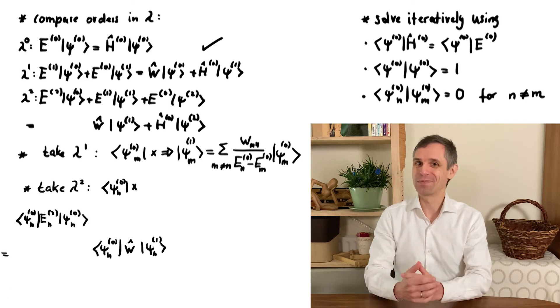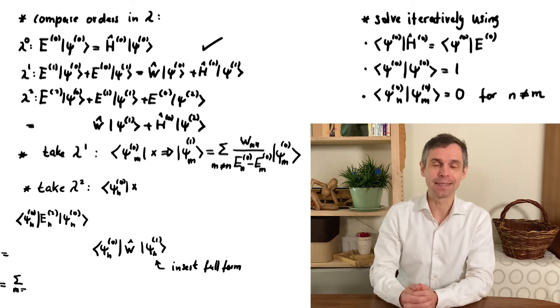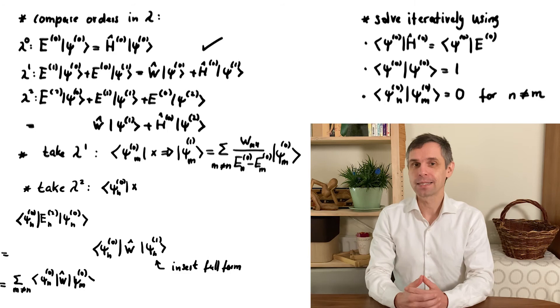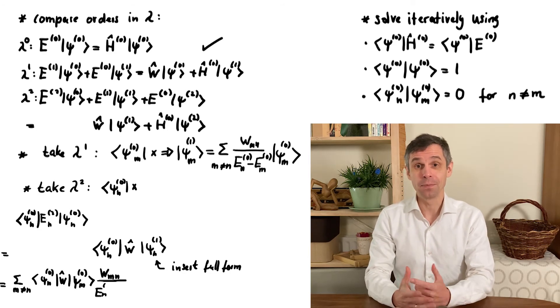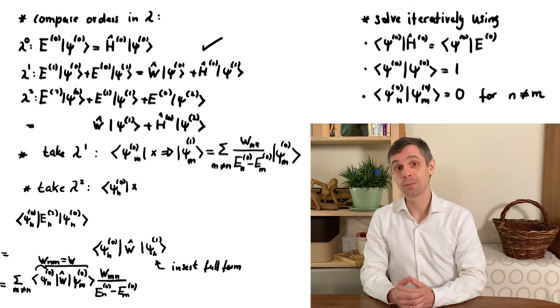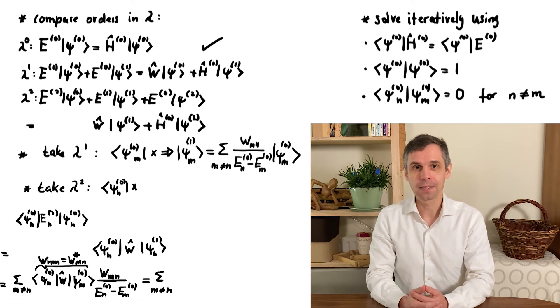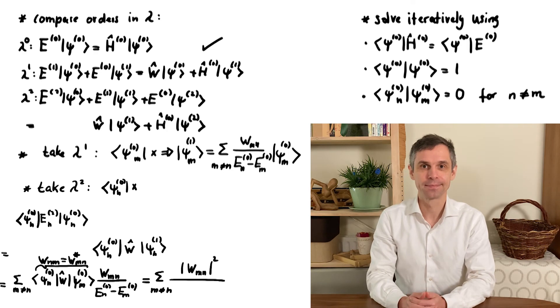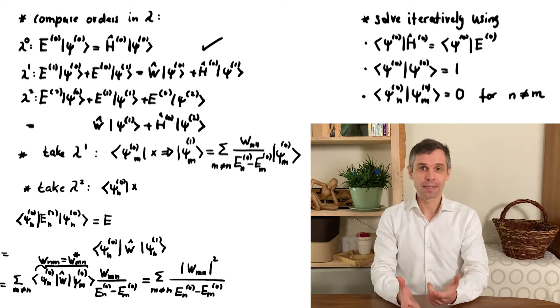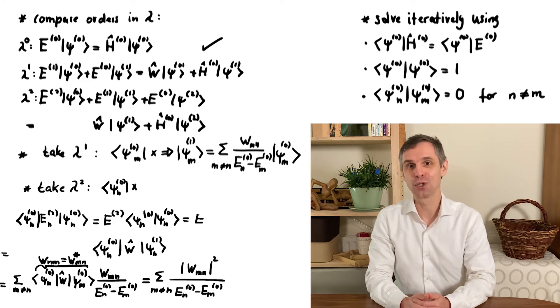So now only two terms are left. Again, in the second one we can insert the full form of the leading correction to the state. We then again encounter the matrix elements of the perturbation. This is a Hermitian matrix as it is the difference of two Hermitian operators, the Hamiltonians of the original and the perturbed quantum system. So we can rewrite this so that together with the other term this becomes its absolute value squared. And finally, using again the normalization condition in the first term, we see that we now have an explicit expression for the second-order correction of the energy.